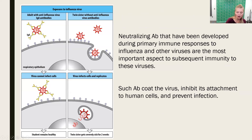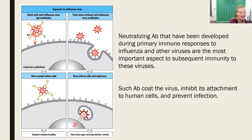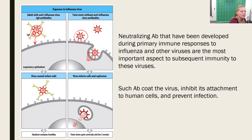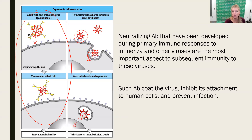We can see our pathogen up here trying to get onto one of these receptors, but IgA will bind up all of the ligands that it would normally use to bind to that receptor, preventing it from ever gaining access. If we have no antibodies binding up those ligands, then binding to the receptor can happen and the virus can be internalized. With our IgA, we're preventing infection from happening, so nobody will even know that they came in contact with the virus.